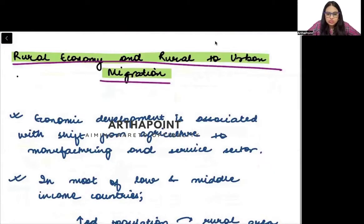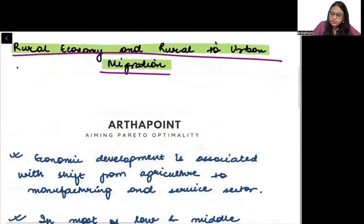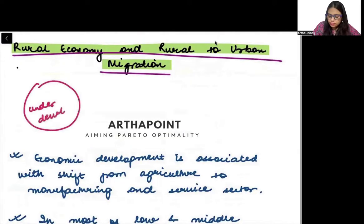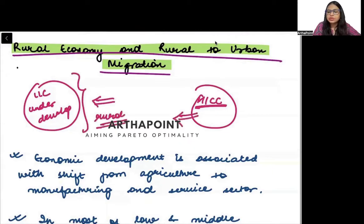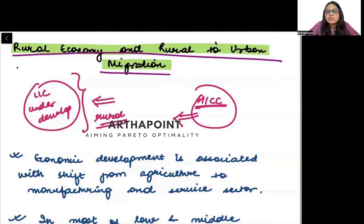There are two main things here. First of all, if I compare an underdeveloped or a low-income country with a high-income country, you will notice that in a low-income country, the majority of people are in the rural region. Whereas in high-income countries, the majority of the people are in the urban region. So we can divide and understand countries based on how the population is distributed.